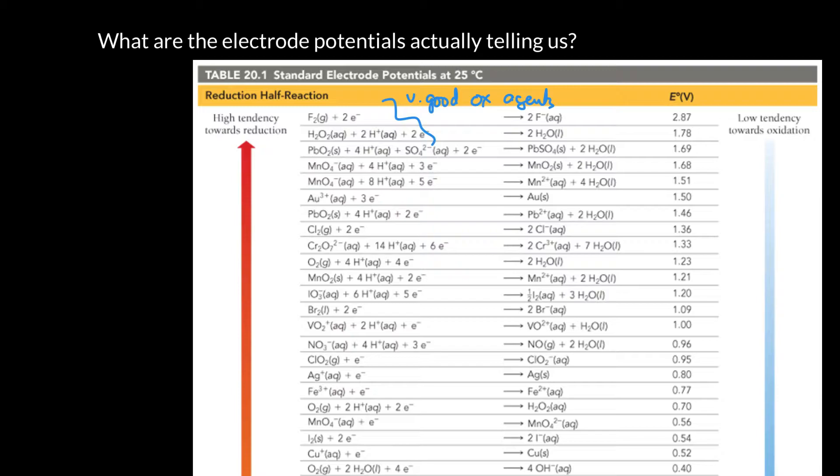So that's one really nice way to think about it. Things at the top of the list are easily reduced. And that's another way to look at it. So that's what it means here on the left-hand side.